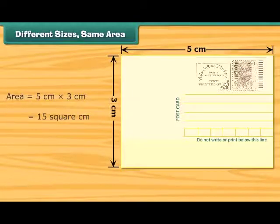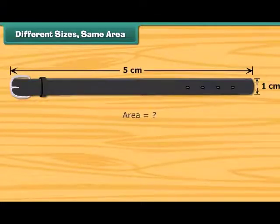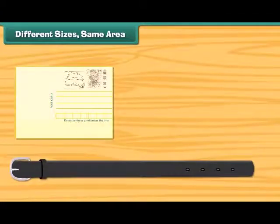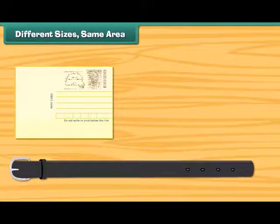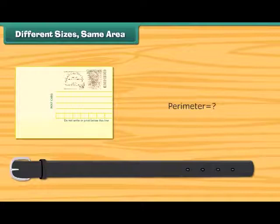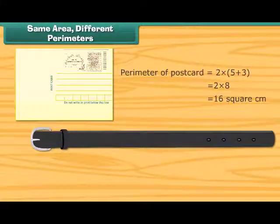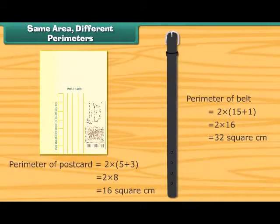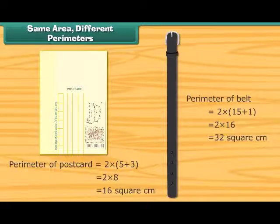Look at this postcard — its area is 15 square centimeters. The area of this belt is also 15 square centimeters. Both postcard and belt have the same area, but their sizes are different. What about their perimeters? The perimeter of the postcard is 16 centimeters, while the perimeter of the belt is 32 centimeters. Thus, things with the same area can take different forms, and their perimeters can be same or different.